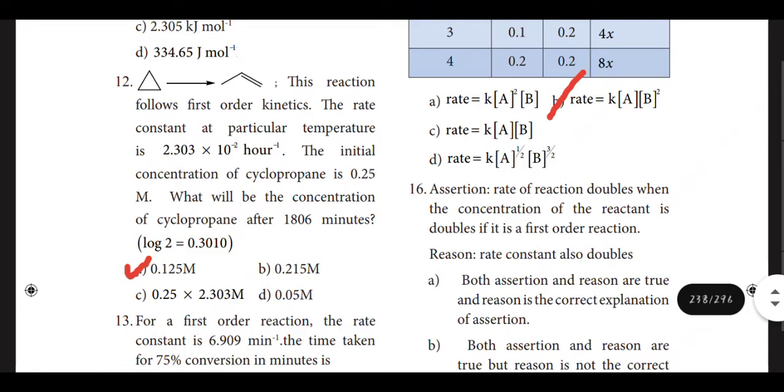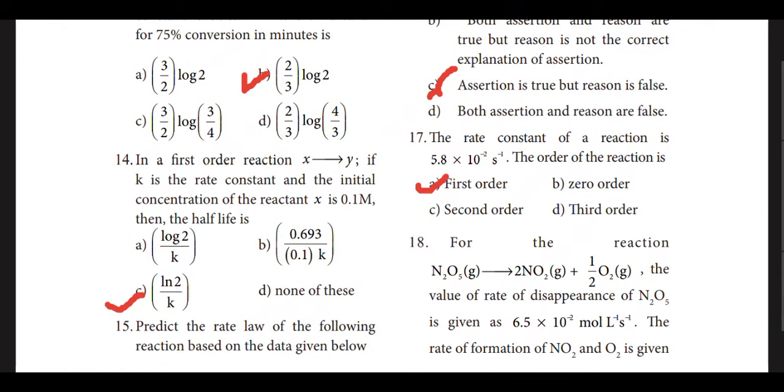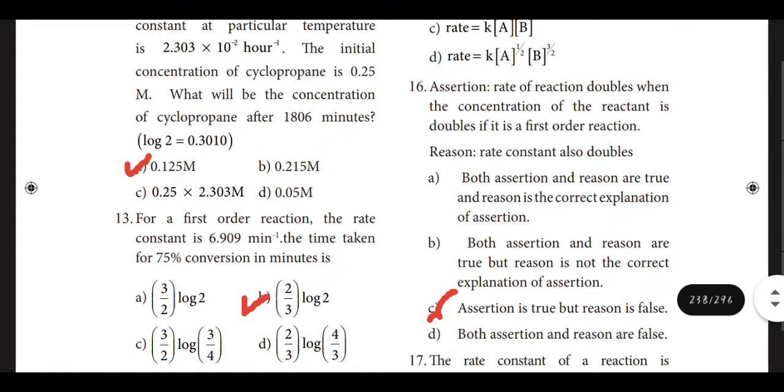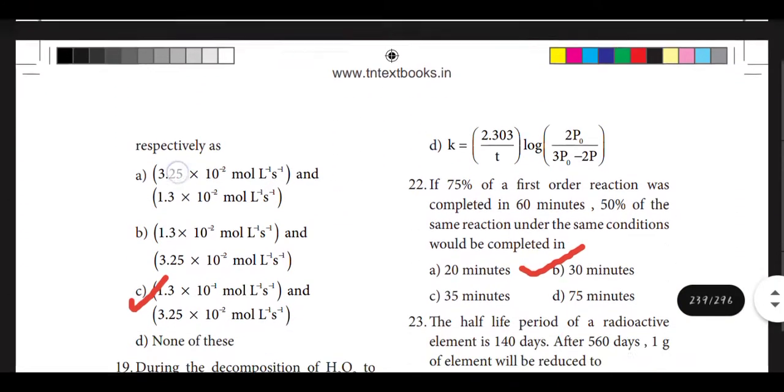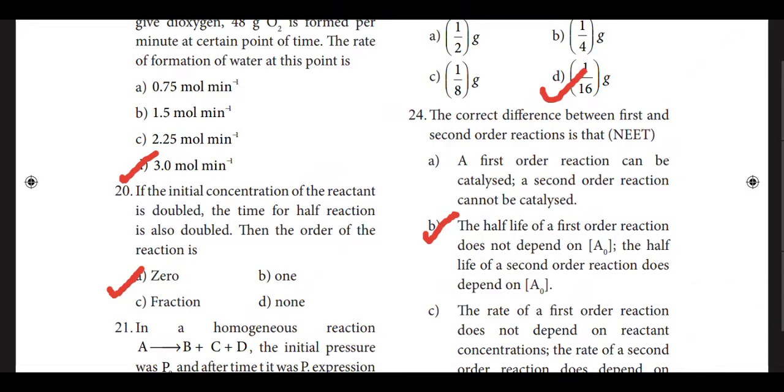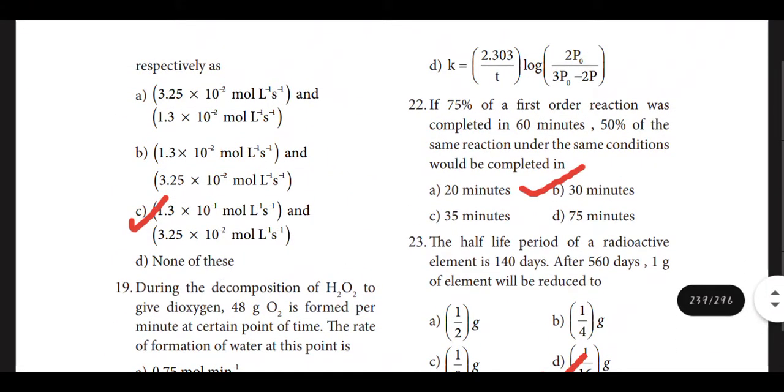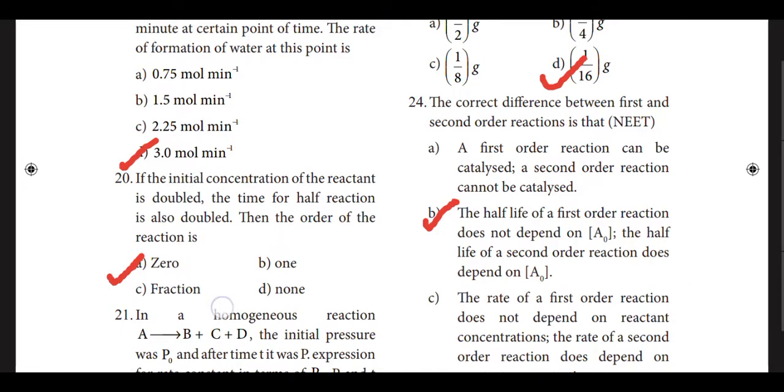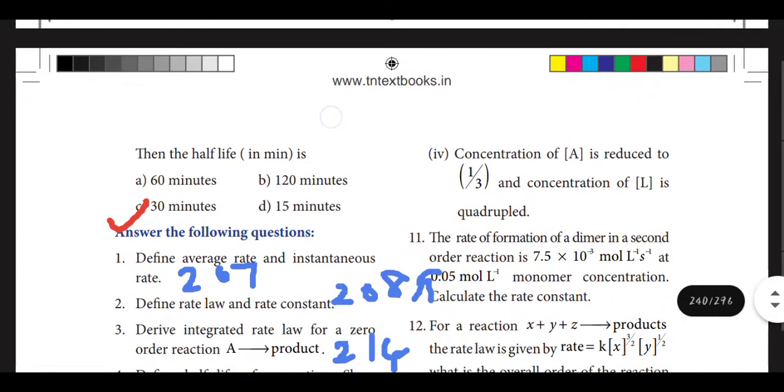11th one option B, 12th one option A, 13th one option B: 2 by 3 log 2, 14th one option C, 15th one option B: rate equal to K into A B squared. 16th one option C, 17th one option A: first order.